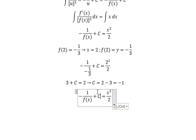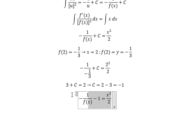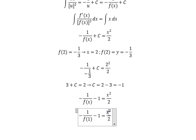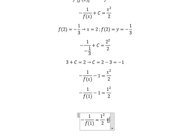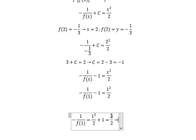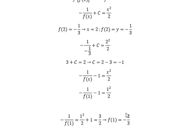We substitute c = -1 into the equation. The question asks for f(1), so we put 1 in for s. We rearrange, moving negative one to the right, giving three over two. Then moving f(1) to the right and three over two to the left, we get f(1) equals negative two over three. This is the final answer. Thank you for watching, see you next time.